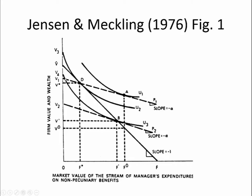And so now they will be incentivized to consume more of these non-pecuniary benefits because they cost them less. In fact, the slope of the new budget constraint line is negative alpha. It was negative one because for every dollar wasted, a dollar was lost to the manager. But now, for every dollar that's wasted, only alpha gets lost — in our example, 70 cents.